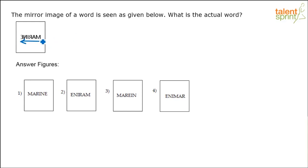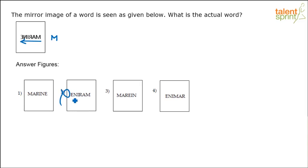So if I read from right to left, what is this? This looks like M, right? Remember in mirror image top remains top, bottom remains bottom, but left becomes right and right becomes left. So that's what we are trying to do — interchange left with right. This is the rightmost element; it becomes the leftmost element and remains like this. So it should start with M. So clearly option 2 and option 4 are eliminated.